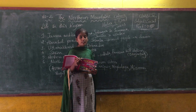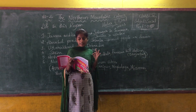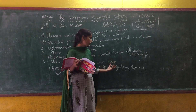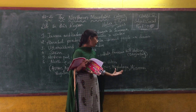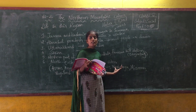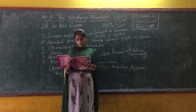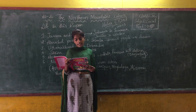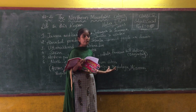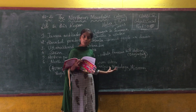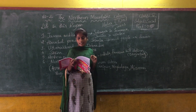The main tribes of Meghalaya are Garo, Khasi, and Jaintia. Farming is the main occupation of the people who live in Meghalaya. The farmers here grow rice, potatoes, jute, sugarcane, oranges, and pineapples.